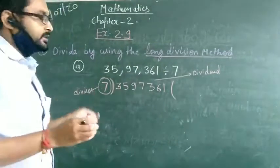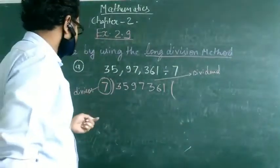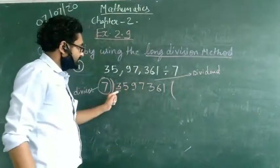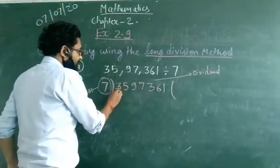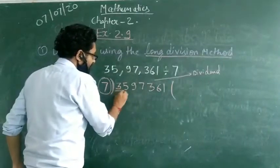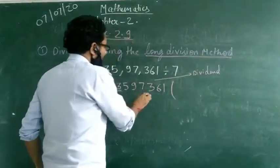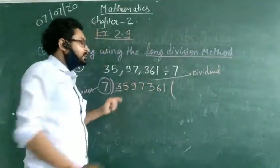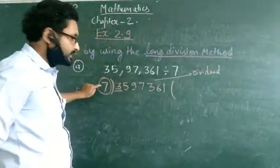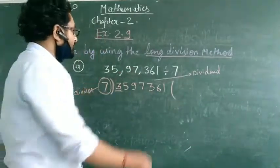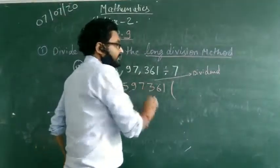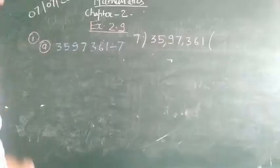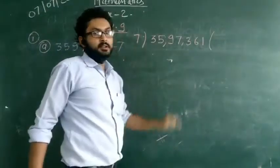Now, the process of division is that first of all, we look at the first digit of the dividend. If the dividend is smaller than the divisor, then we can't divide. If the dividend is greater than the divisor, we can divide. So, we will start here.